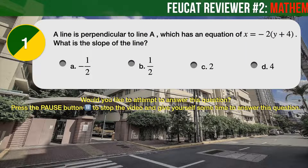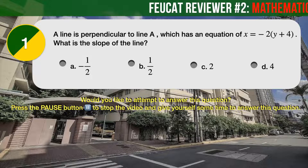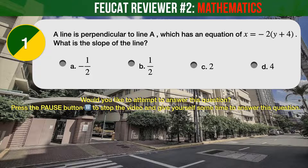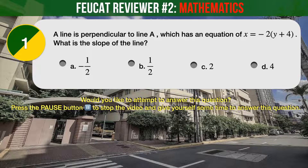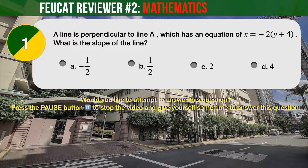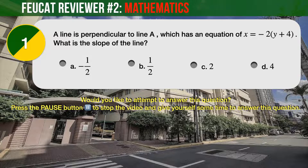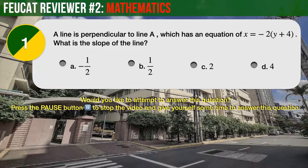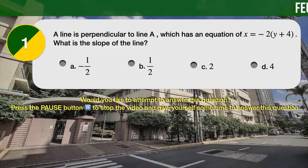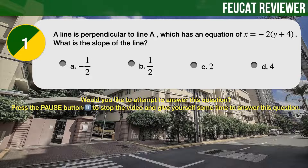Question Number 1. A line is perpendicular to line A, which has an equation of X equals minus 2 times the quantity Y plus 4. What is the slope of the line? A: minus 1 half. B: 1 half. C: 2. D: 4.